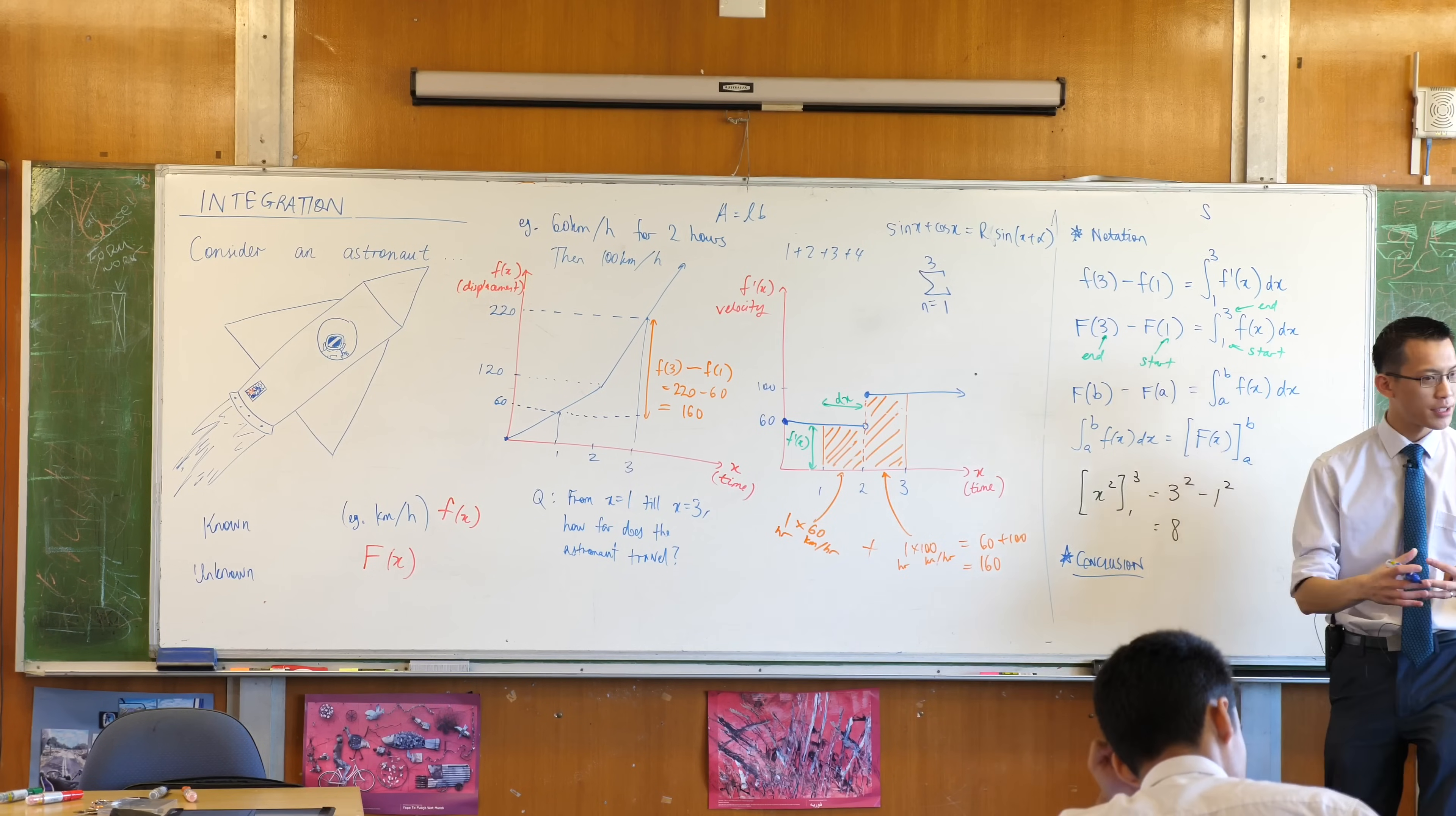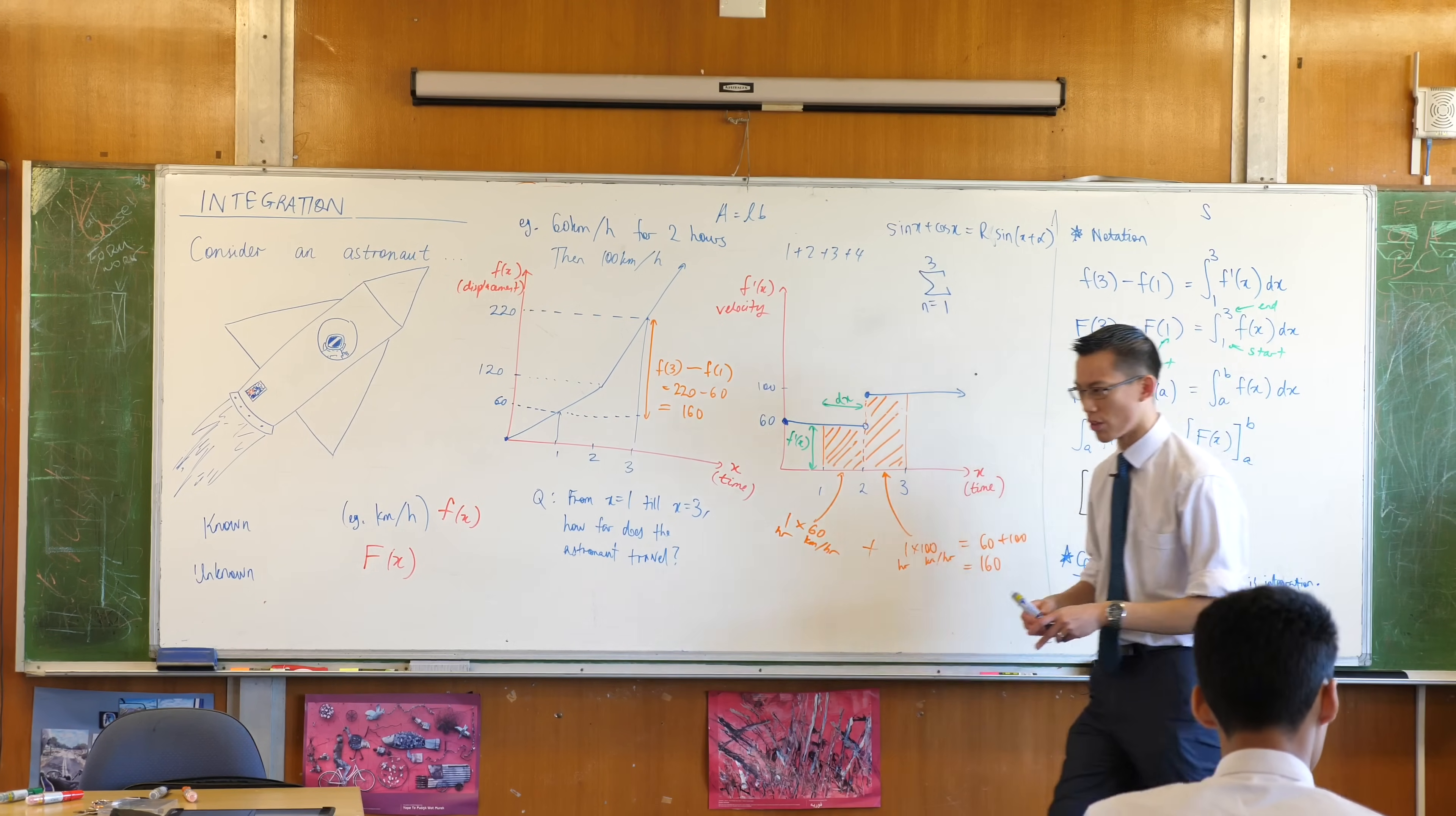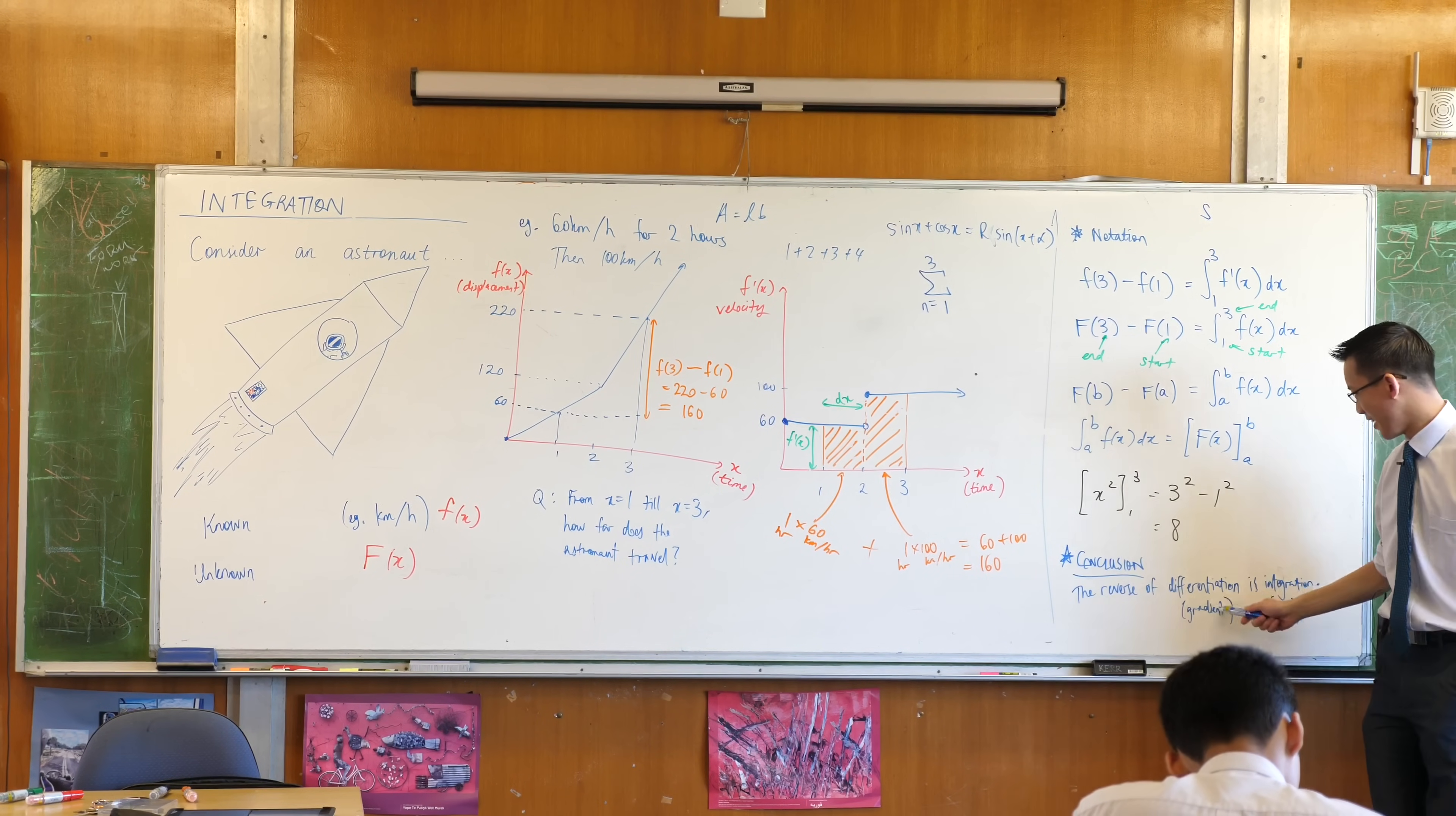This process here, the reverse of differentiation, is integration. So the opposite of finding a gradient, that's what differentiation does, is finding an area, which is not at all intuitive. If someone asks you what's the opposite of hot you'd say cold, what's the opposite of up you'd say down. If someone said what's the opposite of gradient, area is not the first thing that would come to mind. But this allows us to do so much because in so many places in the world we know how something is changing. We know how fast we're traveling, we know how fast the water is going into the fossil, but what we don't know is what's the total change. And that's what integration lets us calculate. It's really about area.